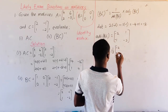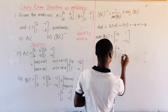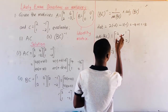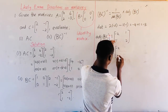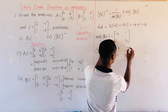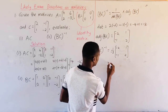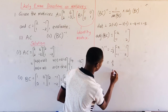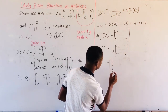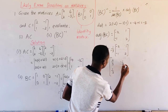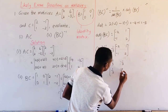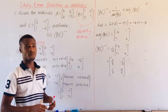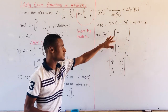Our inverse is going to be 1 over the determinant times the adjoint. With the positions interchanged we have negative 2, then negative 1, 1, and 2. Doing the scalar multiplication, this gives us: 2 over 3, 1 over 3, negative 1 over 3, and negative 2 over 3. You can refer to our lesson on the inverse of 2 by 2 matrices for more clarity on this.